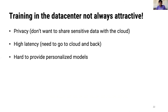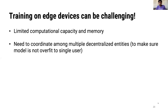Even though training in the data center is the dominant paradigm used today, there are still situations where it is not attractive. Communicating with the cloud can decrease privacy since sensitive data might need to be communicated from edge device to cloud for training. This sensitive data could be compromised either en route to the cloud server or within the cloud server itself. Communicating with the cloud can also increase latency through added communication on the critical path. Additionally, training personalized models in the cloud can quickly become extremely cumbersome. To route around these problems, various solutions have been proposed to train models directly on edge devices. Training on edge devices introduces a host of new challenges — edge devices typically have limited computational and memory capacity and might be power limited. Models might also need to be trained collaboratively across many devices to ensure models are not overfit to single users. This is a new paradigm known as federated learning.